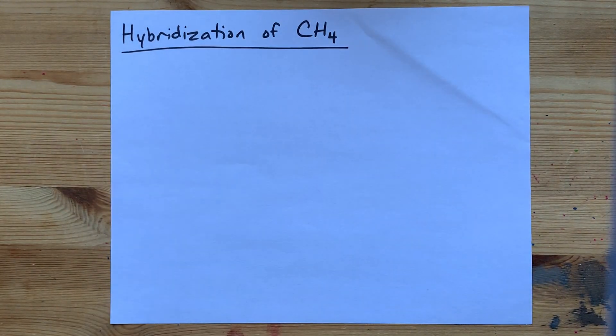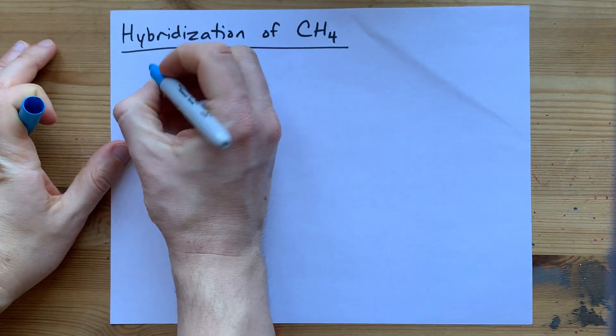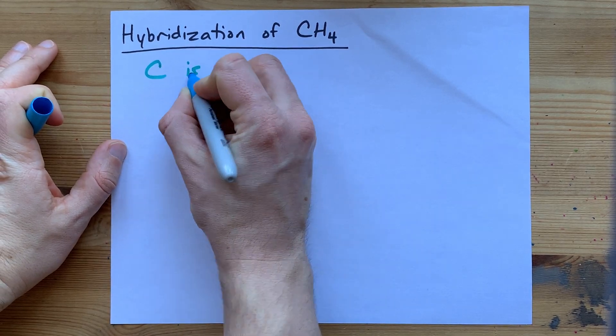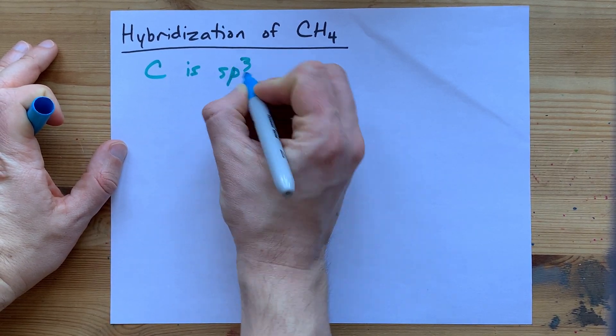What's the hybridization of CH4? Well, the short answer is that the carbon is SP3 hybridized.